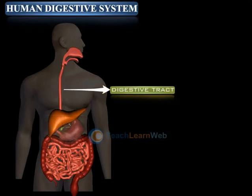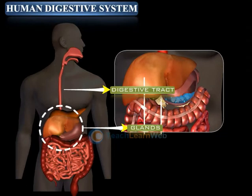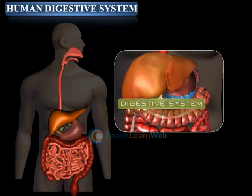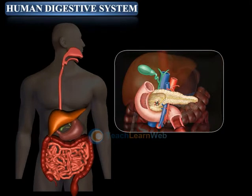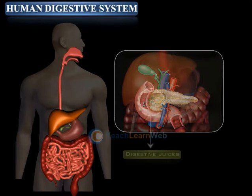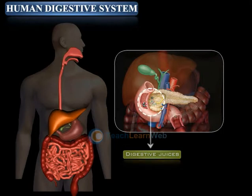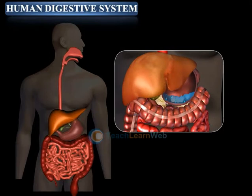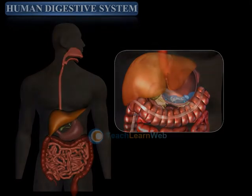The digestive tract along with the glands is called the digestive system. These glands and the inner walls of the stomach and small intestine secrete digestive juices, which convert complex food molecules into simpler substances.